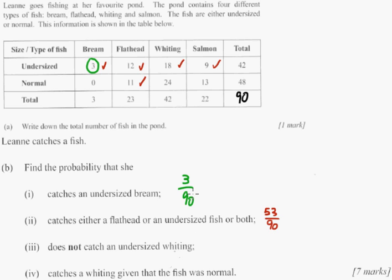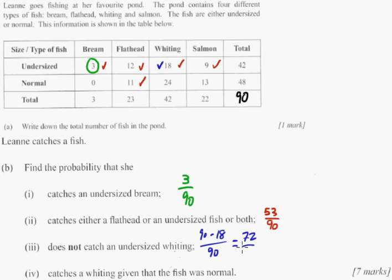Does not catch a whiting — specifically an undersized whiting, so you've got to be careful. There are 18 undersized whiting. The probability that Leanne catches one is 18 out of 90. So we just do 90 minus 18 because that's the probability she doesn't catch one — giving 72 out of 90.